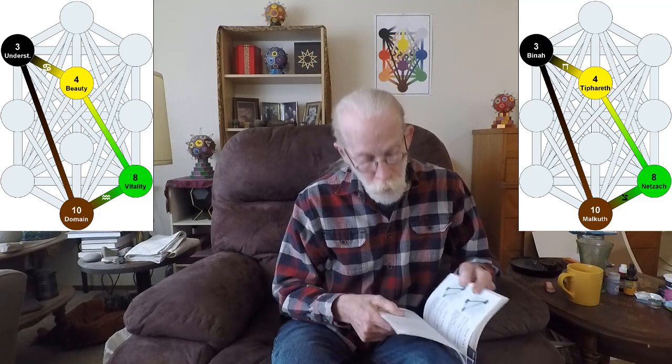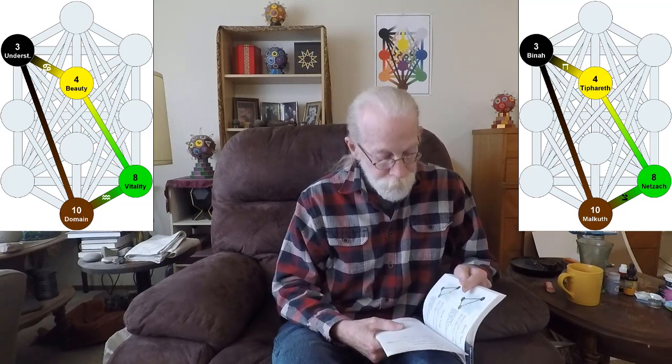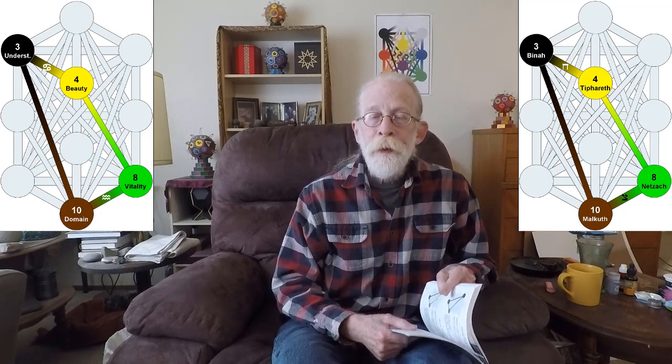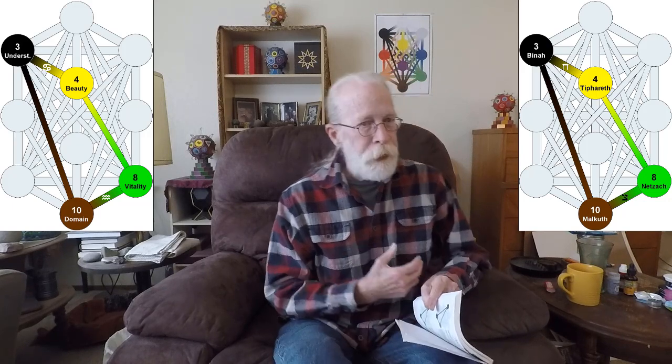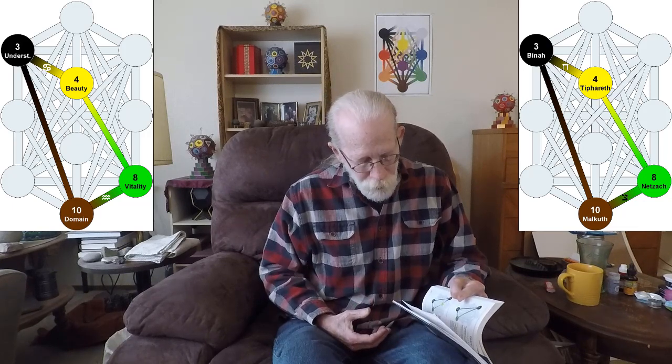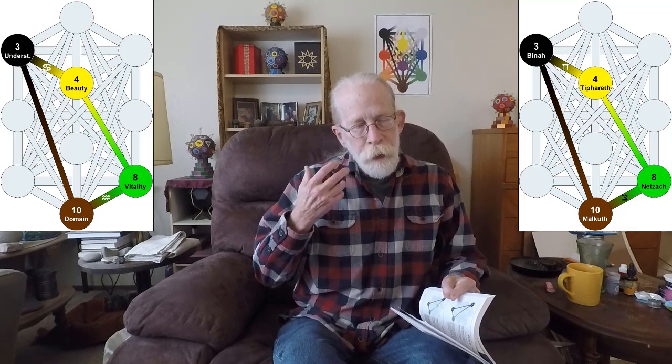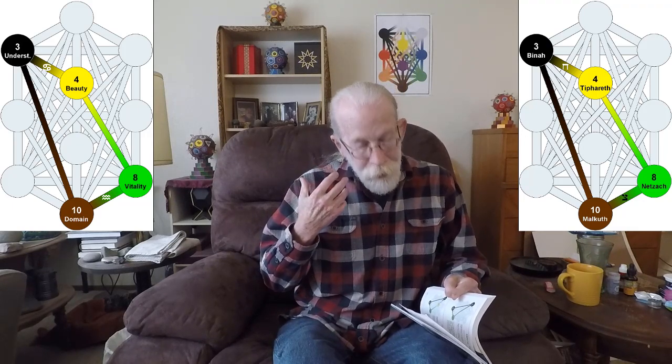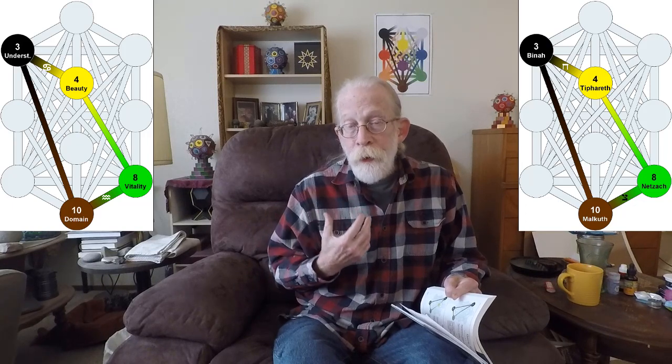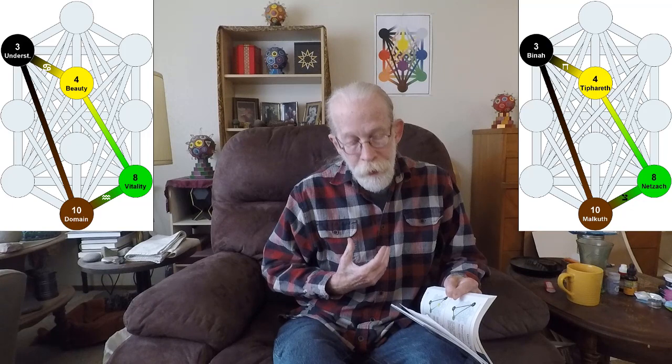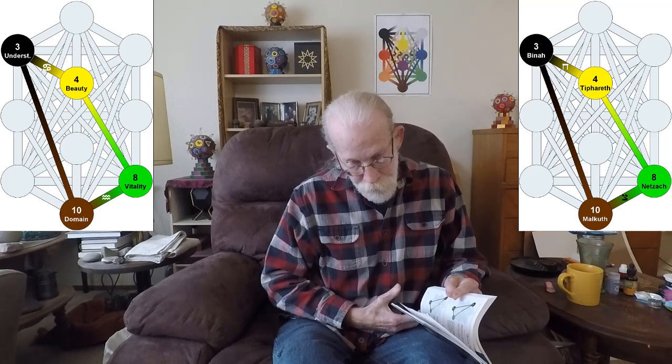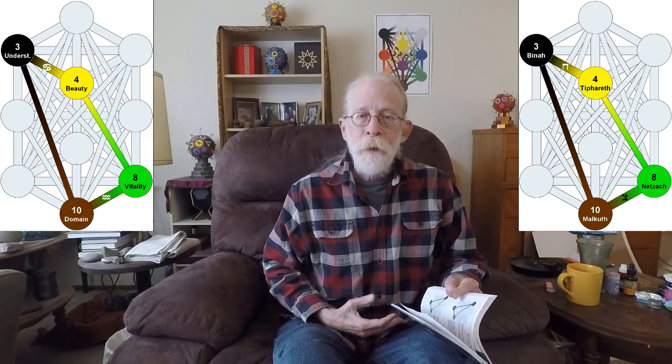The next one is the first quadrangle, gate number 152, and it goes from Netzach, down that path of Tzadi, Aquarius, to Malkuth, up the hidden path to Bina, this brings in the karmic aspect, down the path of Cancer to Tiferet, and then down that hidden path to Netzach, and then back around.